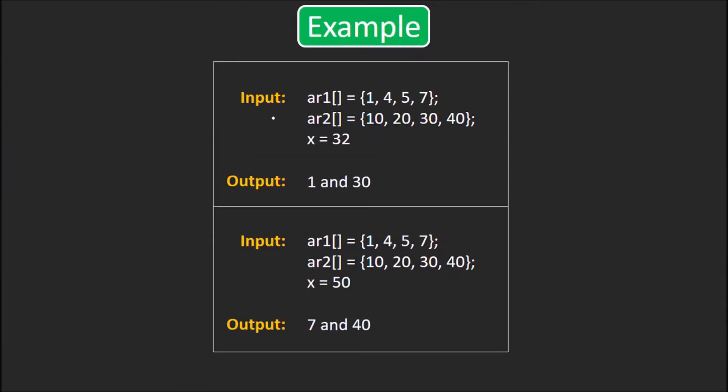The example will help you understand better. We are given these two arrays and x is 32. We need to find a pair with one element from both ar1 and ar2 such that their sum is closest to x. Now, if we pick 1 from ar1 and 30 from ar2, their sum is 31 which is the closest to 32. You can pick any other pair and see for yourself.